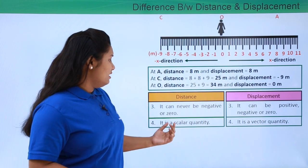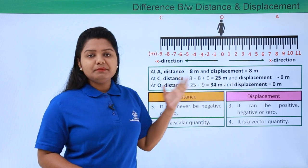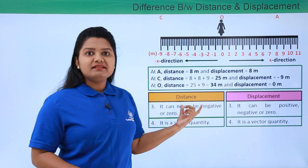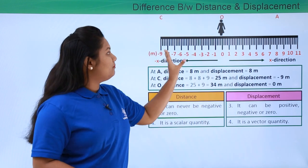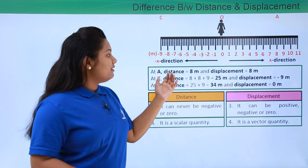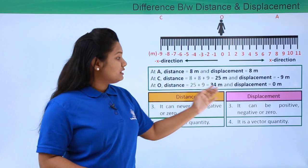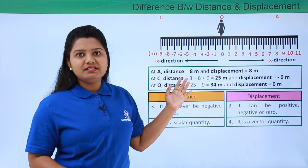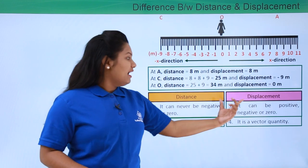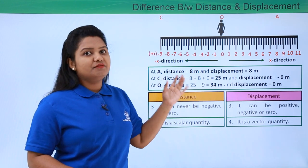Distance is a scalar quantity and displacement is a vector quantity. A scalar quantity is always concerned about the magnitude of the path taken — for example, distance. We are only concerned about the length of the path, which is independent of the direction. But in case of displacement, we consider both the magnitude and the direction of the body. So distance is a scalar quantity and displacement is a vector quantity since it includes direction as well.